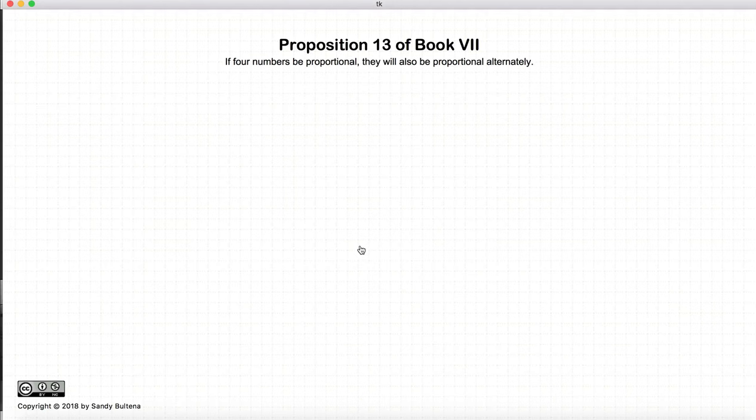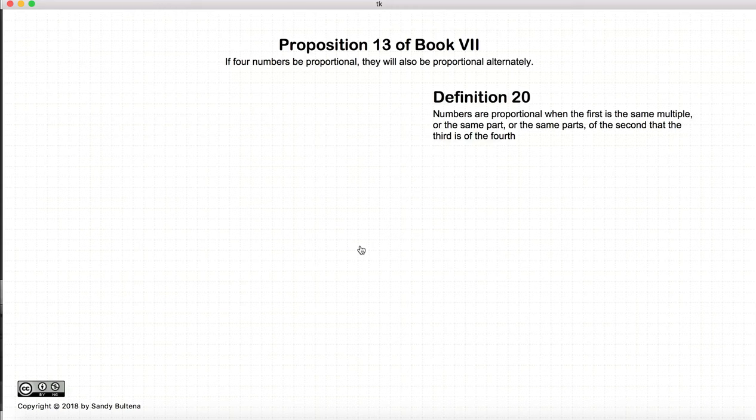This video presentation is on Proposition 13 of Book 7. In this proposition, we need to remember the definition of proportional. Numbers are proportional if the ratio of A to B is equal to C to D, and if A is the same fractions of C that B is of D.